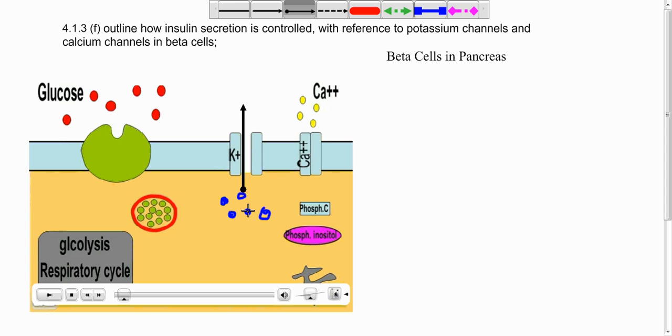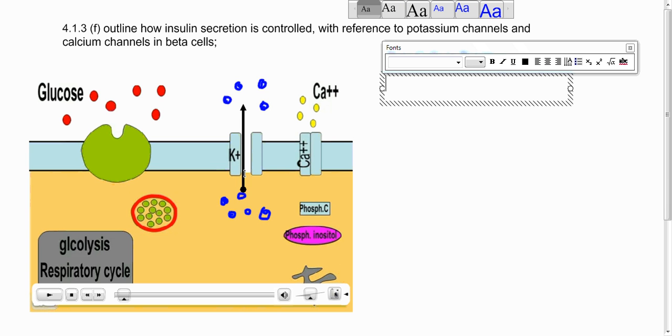These potassium ions move through the potassium channel to the outside of the cell. So normally speaking this is before the blood glucose level has gone up and the potassium ions flood down their concentration gradient from inside to outside.